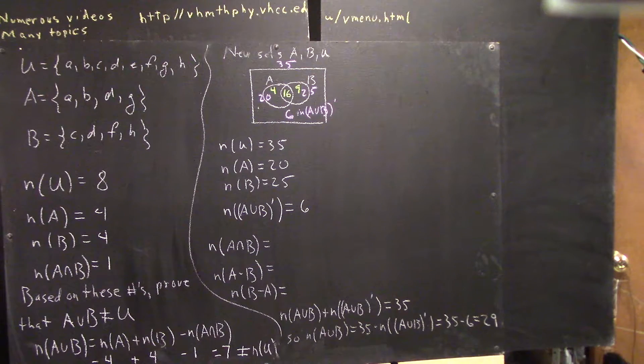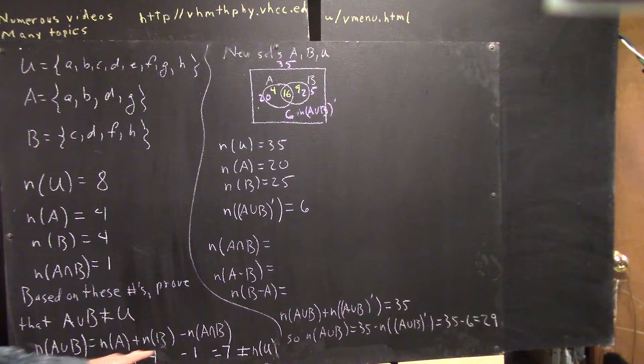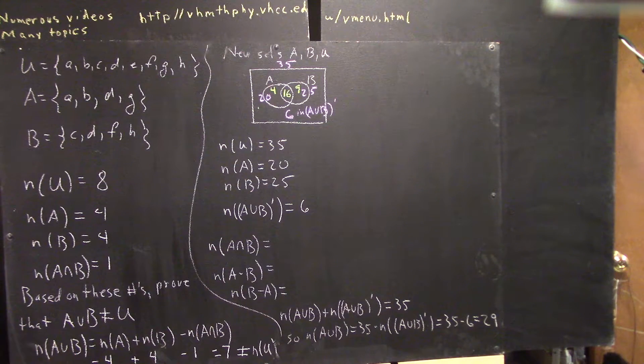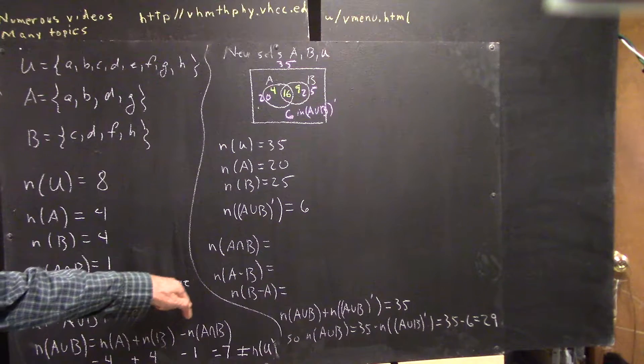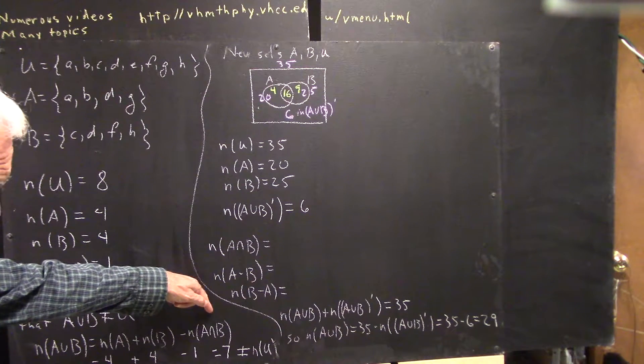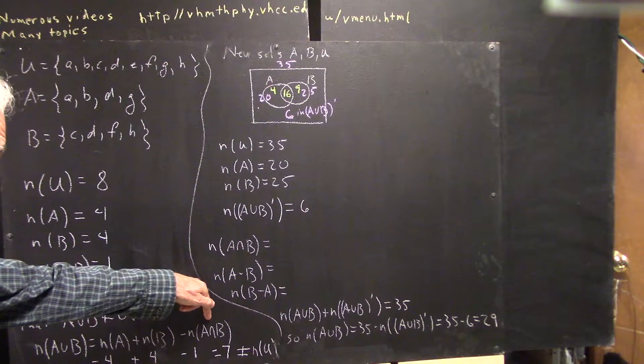Now, we can prove that by this simple equality that we've talked about, and this just expresses the fact that if you want the number or the cardinality of A union B, you can add the number in A and the number in B, but you have to subtract the number that's been counted twice, and that's the number in the intersection.